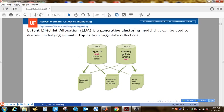LDA can learn several topic-word distributions for these corpora. For example, organize, lead, committee have high probabilities in the first topic, which we can interpret as a government topic. Words such as mercury, pollute have high probability in the second topic. This topic may be pollution.